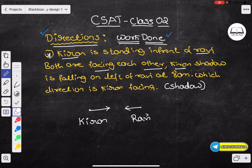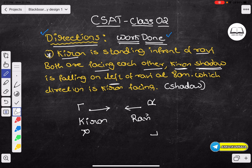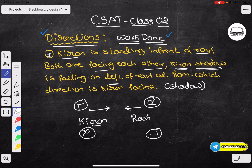First, I will have Kieran's shadow. Kieran's shadow is falling on the left of Ravi. So if you look at Ravi, you see Ravi is left, he builds a nail on the left side. Kieran's shadow is on the left side.